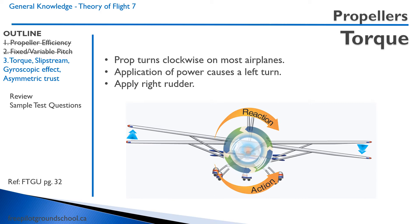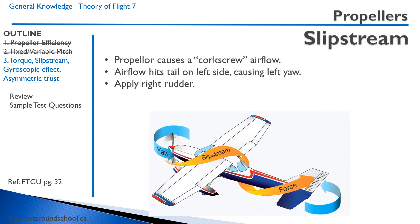Let's talk about sources of yaw caused by the propeller. First, torque: the propeller in most North American airplanes turns clockwise, so adding power causes a left turn due to the opposite reaction — we apply right rudder. Second, slipstream: when the propeller turns clockwise, it creates a corkscrew pattern of air around the fuselage that hits the left side of the vertical stabilizer, forcing the tail right and the nose left — again, we apply right rudder.